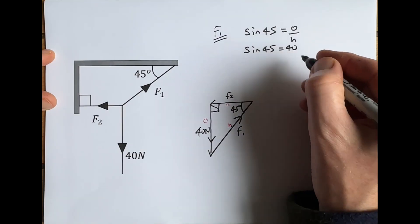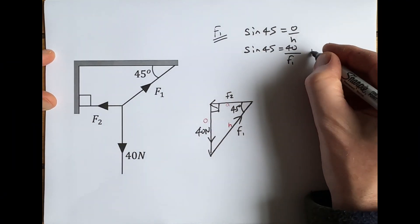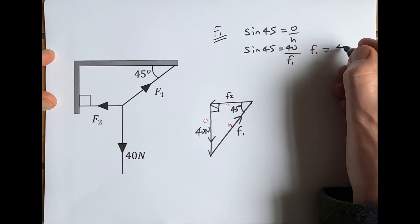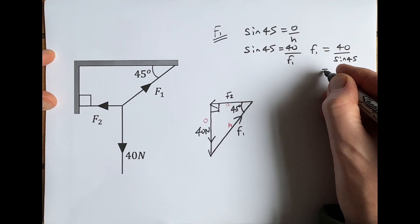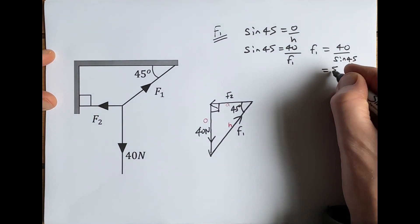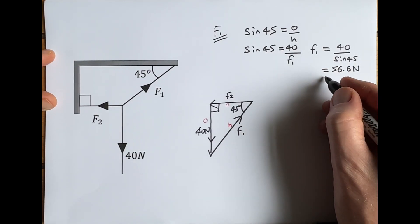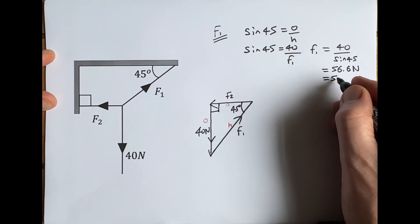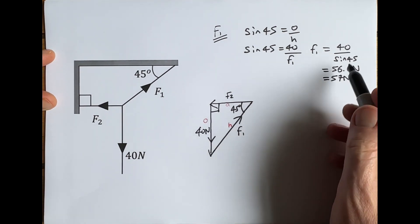So if you rearrange that, you're going to get F1 equals 40 over sine 45, and if you stick that into your calculator you'll find that gives you 56.6 newtons, and we can round that to 57 newtons to two significant figures.